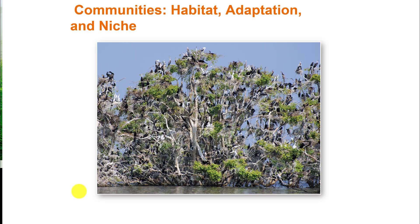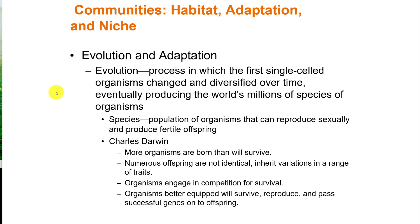This habitat has various needs in terms of nutrients, water, space, soil, and energy to support not only the plants but also the birds. From an evolutionary perspective, evolution is the process in which the first single-celled organisms changed and diversified over time, eventually producing the world's millions of species. A species is defined as a population of organisms that can reproduce sexually and produce fertile offspring.